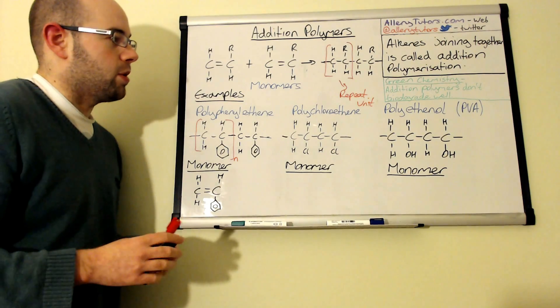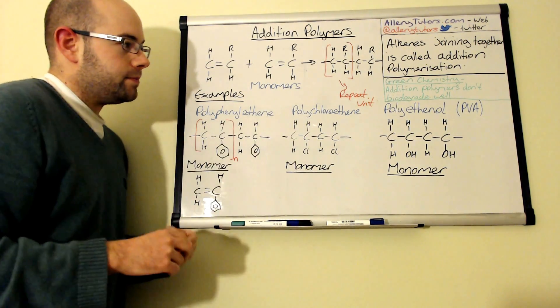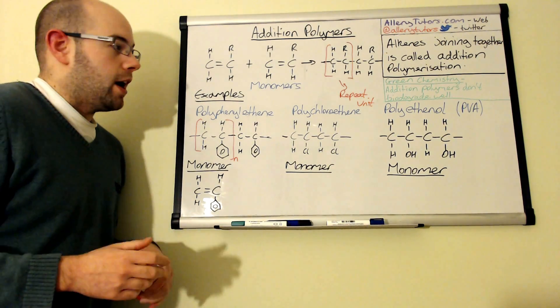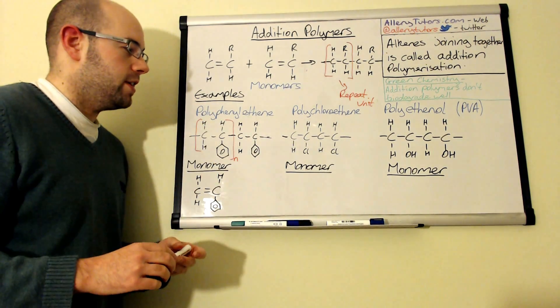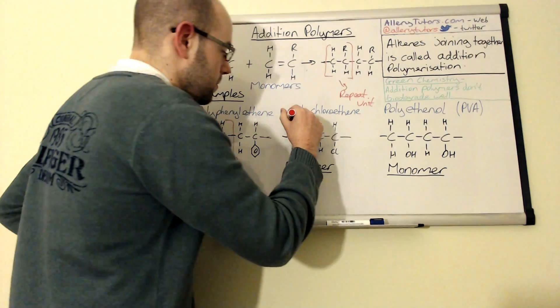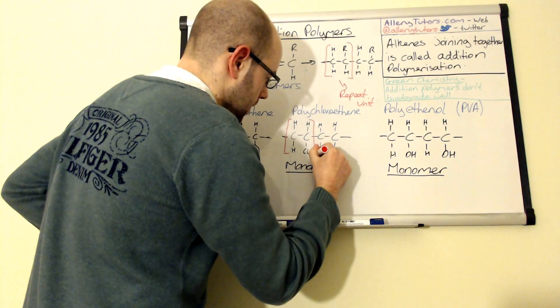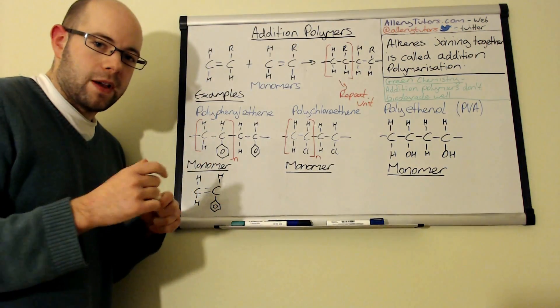We've got another one which is polychloroethene and you may know this as PVC, and so polyvinyl chloride is its old name but we call it polychloroethene. Again we can identify the repeat unit in these so we can draw a square bracket around there and the square bracket around there. We can put an n to show we have a number of them as well.